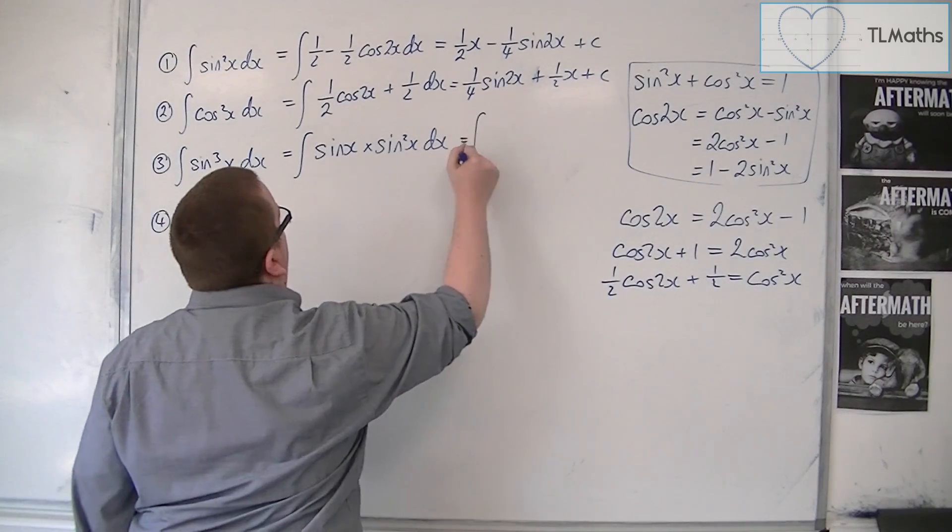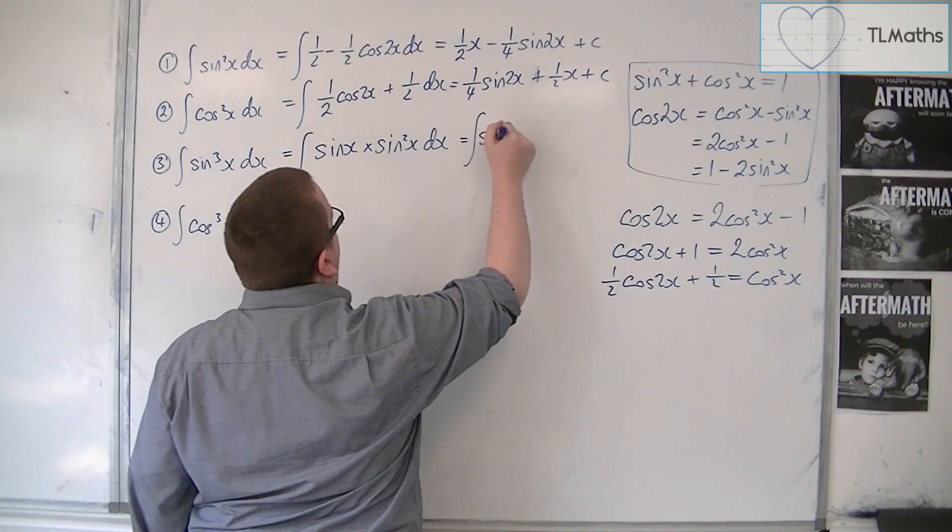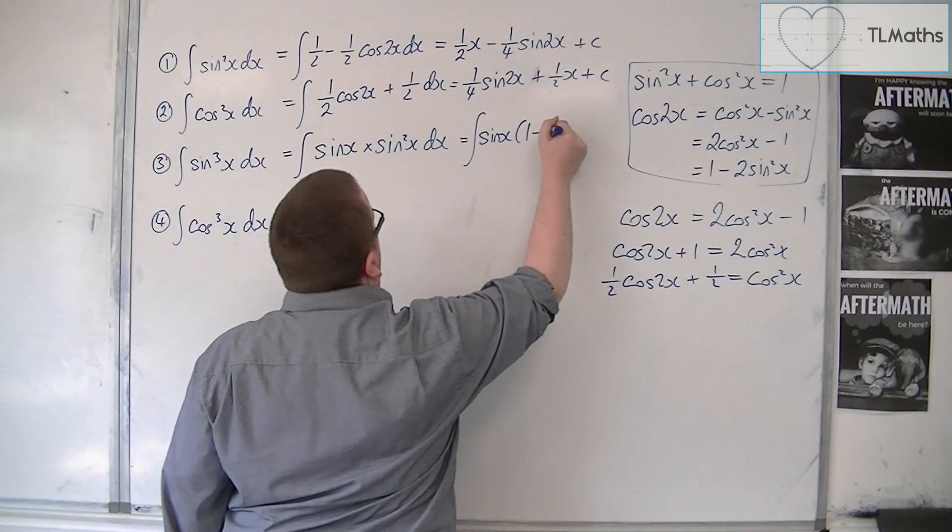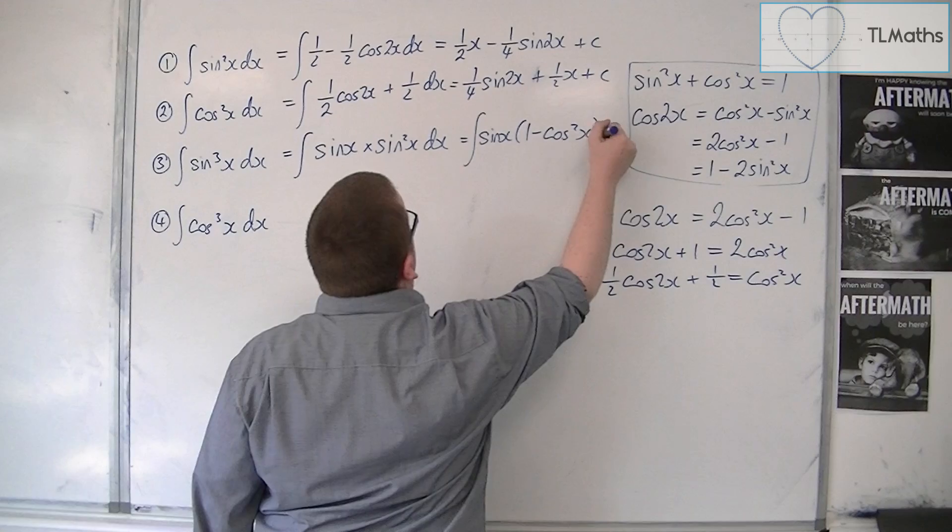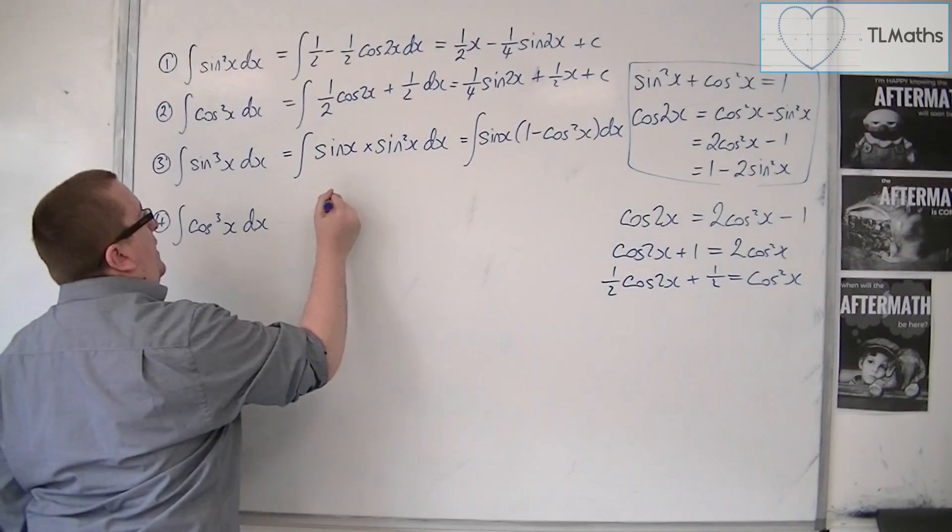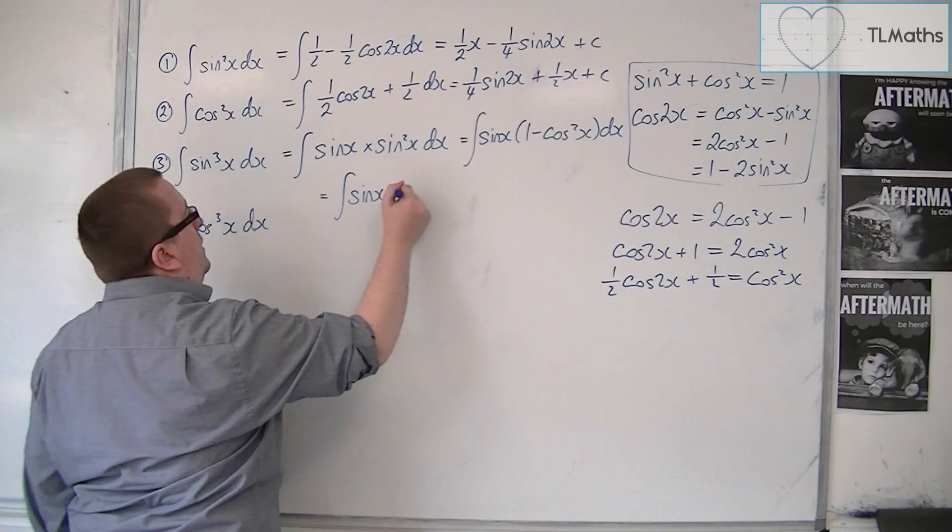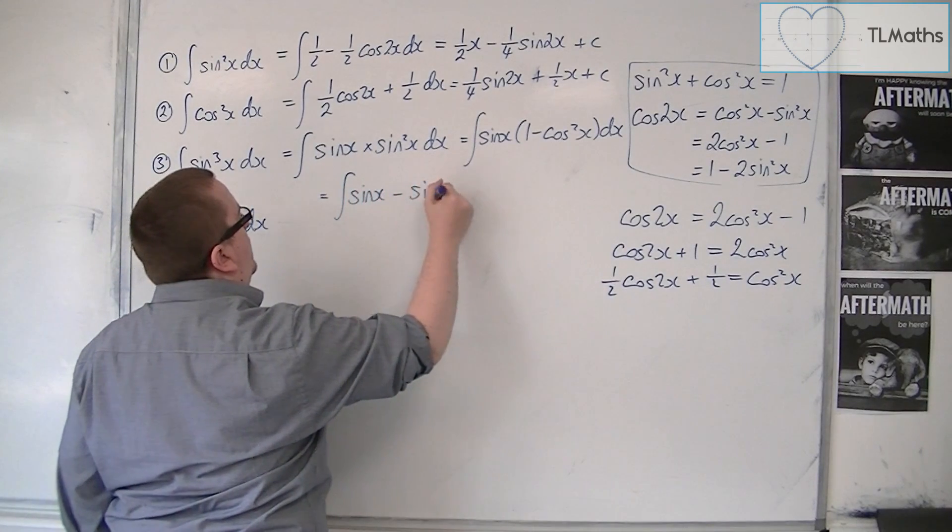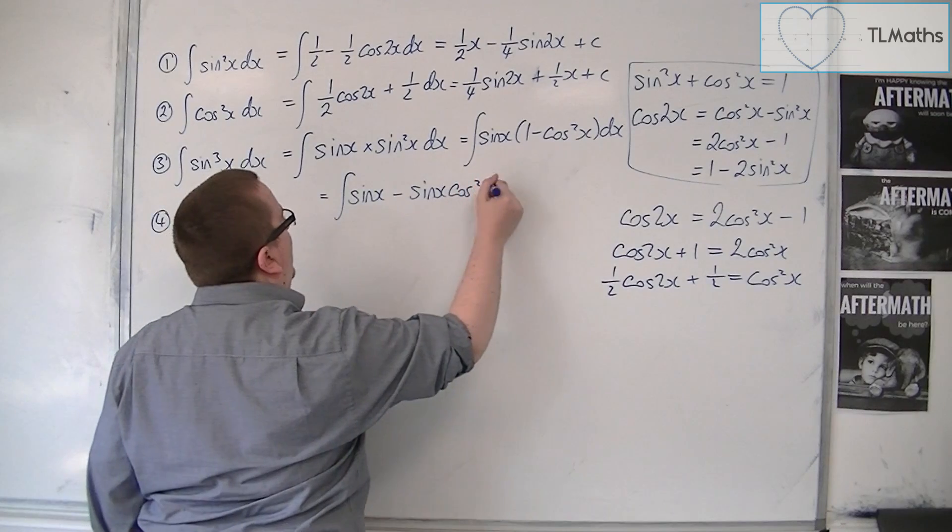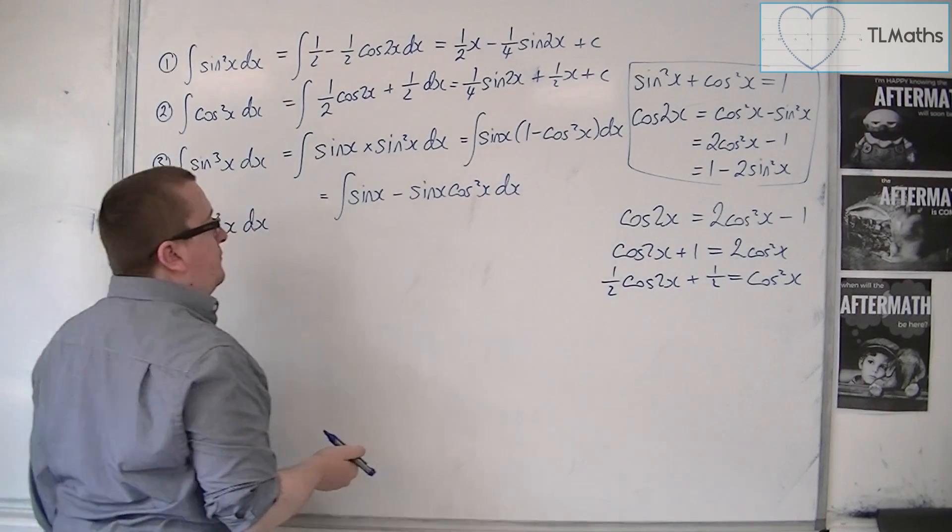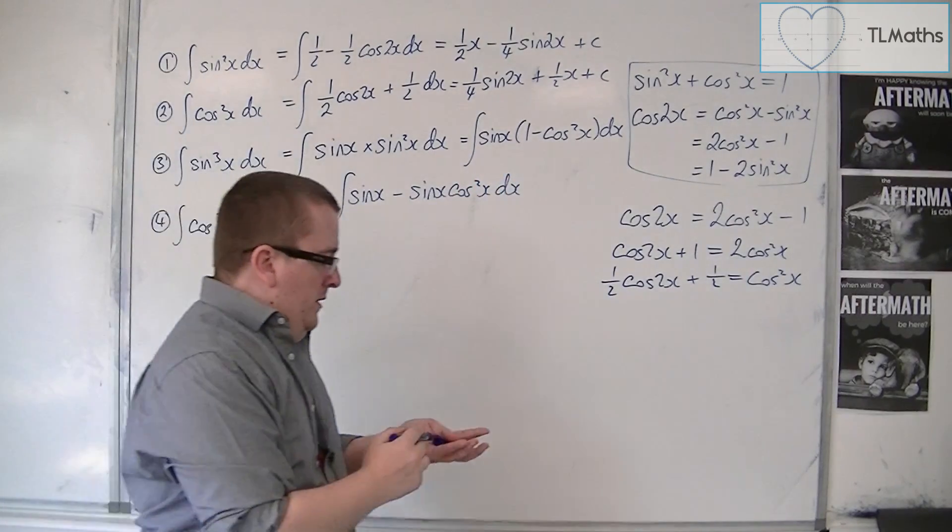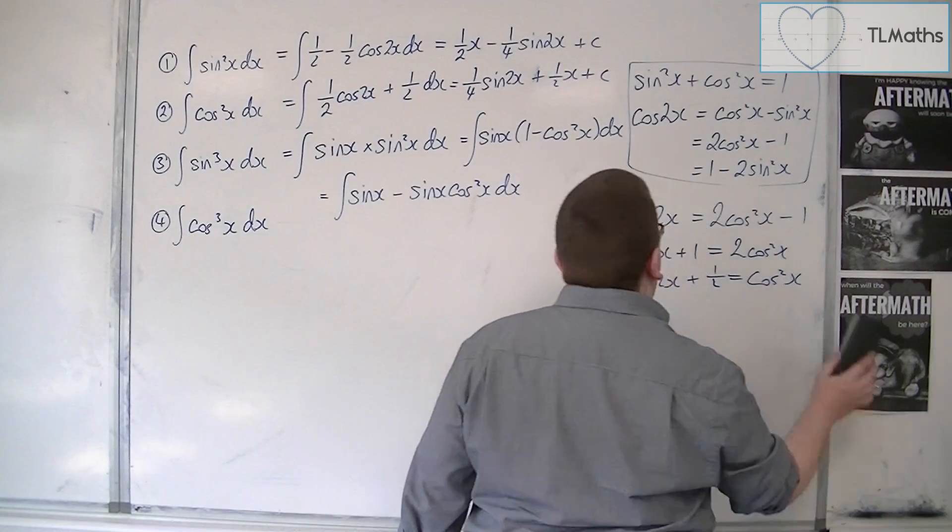So we're going to write this as the integral of sinx times 1 minus cos squared x. So let's see what happens there. We can multiply that out and get sinx take away sinx cos squared x dx. Now, that doesn't make it look any nicer.